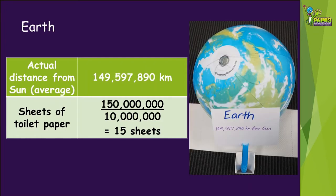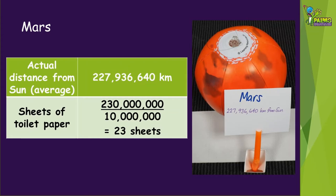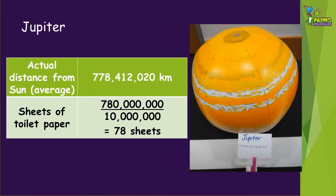The distance to the most habitable planet, Earth, is about 150 million kilometres, so it will be 15 sheets from the sun. Mars, the planet with the largest volcano in our solar system, is about 230 million kilometres from the sun, so our scale distance will be 23 sheets of toilet paper. The distance between the sun and the largest planet in our solar system, Jupiter, is about 780 million kilometres, so our scale distance will be 78 sheets of toilet paper.